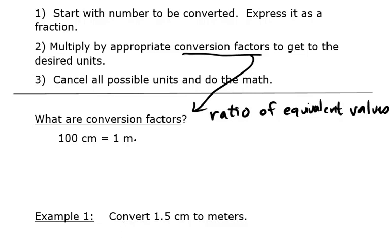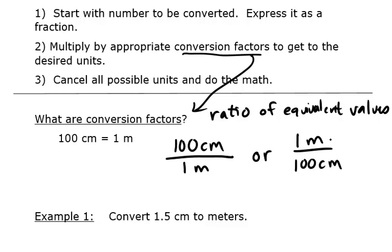To make it a ratio, we turn it into a fraction. We say 100 centimeters over 1 meter. The way to say that is really 100 centimeters per 1 meter. The line means per. But we could also say it the opposite way. We can flip it over and say there's 1 meter per 100 centimeters. So the amount on top and the amount on bottom are actually equivalent, but they're using different units. Those are conversion factors.